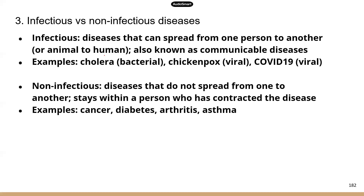Next we're going to talk about infectious versus non-infectious diseases. Infectious diseases, based on the name, are diseases that can spread from one person to another — transmission between humans. There are also diseases that can jump from animals to humans, such as HIV, SARS, or COVID-19. Those viruses originated in animals, and it just happened that those viruses have the ability to infect human cells, so the infection leads to the disease.